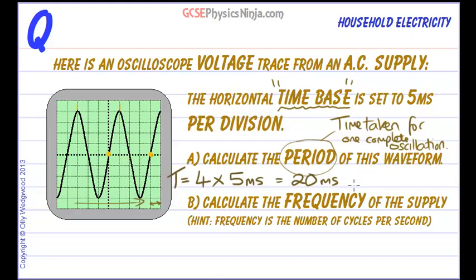Period of this waveform. Now we could convert this to seconds because milli means a thousandth. So if we divided this by a thousand we'd get 0.020 seconds. Just check that. 1, 2, 3. Yes. So that's converting it to standard units.